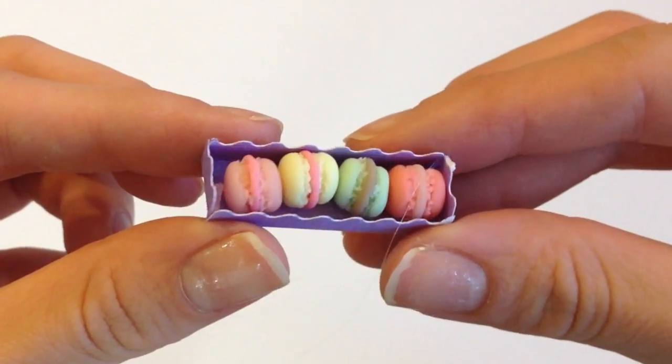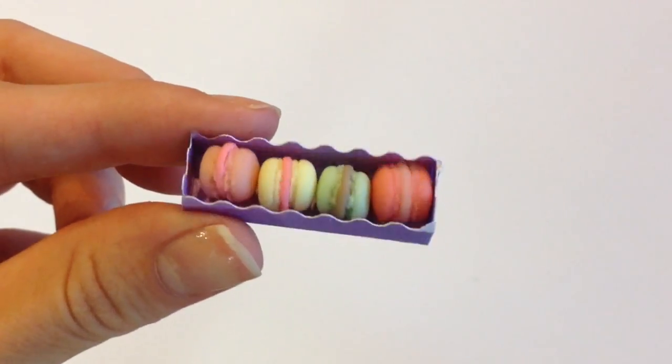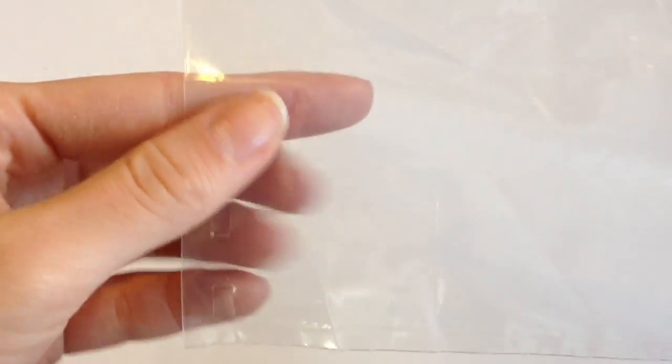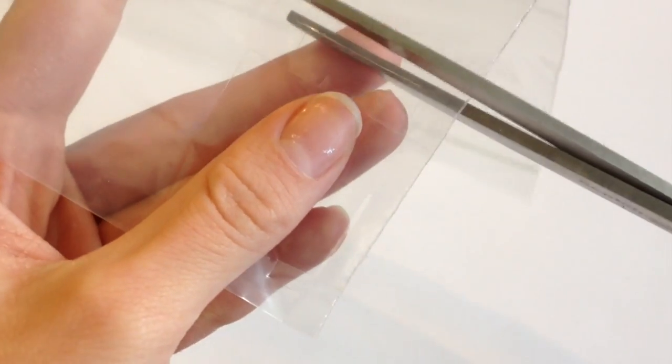Alright, so here's what my box looks like with the macaroons sitting inside and I'm going to form the little plastic cover that sits on top. So I'm taking a Ziploc bag and I'm using the exact same pattern to cut out the same box pattern that I had with the purple paper.